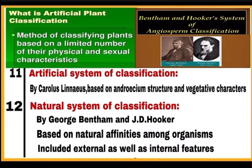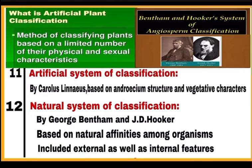Artificial system of classification: the oldest and first approach of classification of plants, given by Carolus Linnaeus. It was based on androecium structure and vegetative characters, and gave equal weightage to vegetative and sexual characters for classifying plants. Natural system of classification for flowering plants: given by George Bentham and J.D. Hooker, based on natural affinities among organisms including both external and internal features — ultrastructure, anatomy, embryology and phytochemistry — to classify flowering plants.